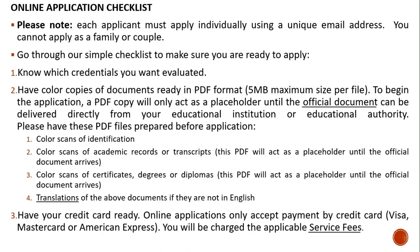Step 3: Online application checklist. Please note that each applicant must apply individually using a unique email address. You cannot apply as a family or couple. Go through our simple checklist to make sure you are ready to apply. Know which credentials you want evaluated. Have color copies of documents ready in PDF format, with a 5 MB maximum size per file.